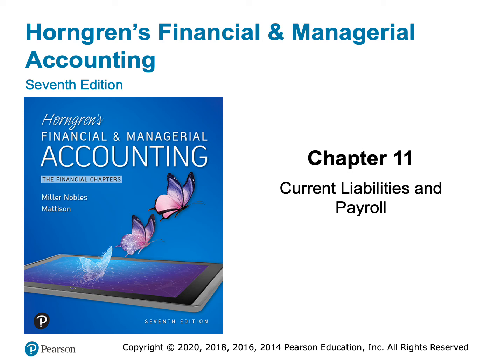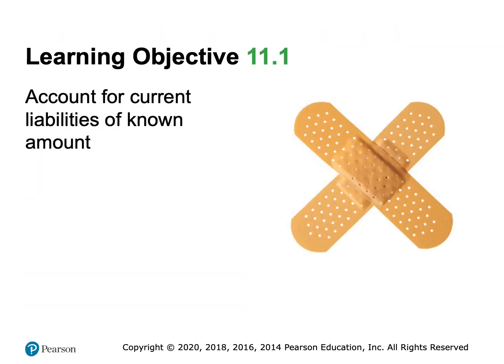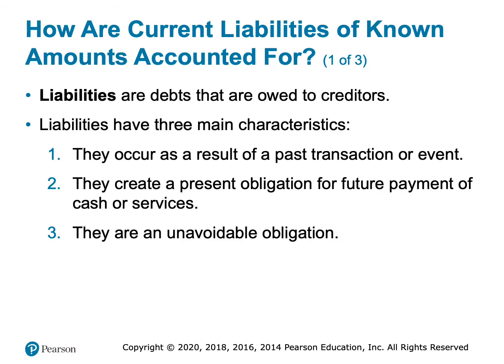Now that we've finished up the asset side of the balance sheet, we're going to move over to the liabilities. We're going to talk about current liabilities in this chapter, long-term liabilities in Chapter 12, and then finish up the balance sheet with the stockholders' equity section in Chapter 13. So first, let's talk about current liabilities of a known amount.